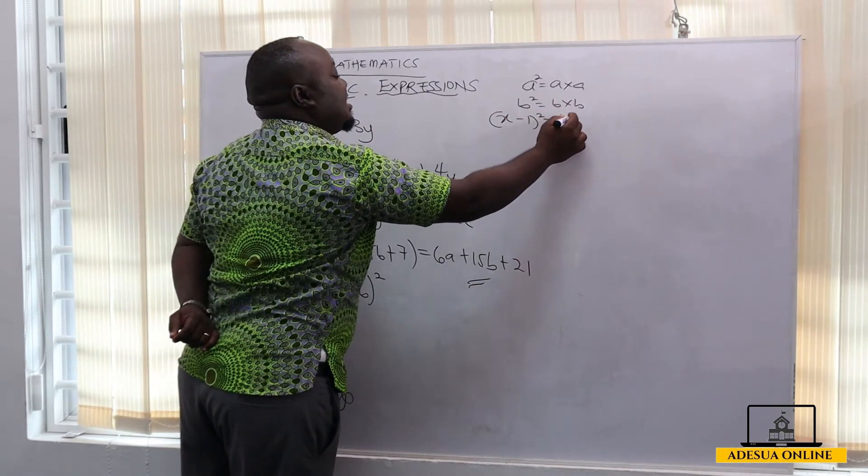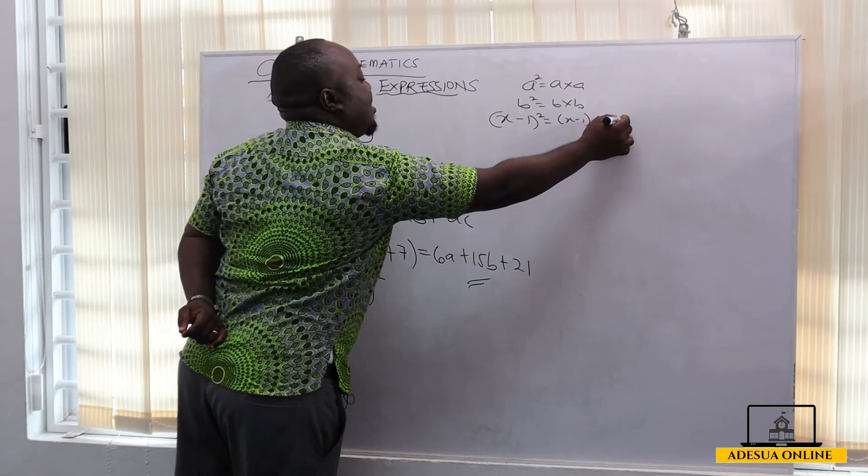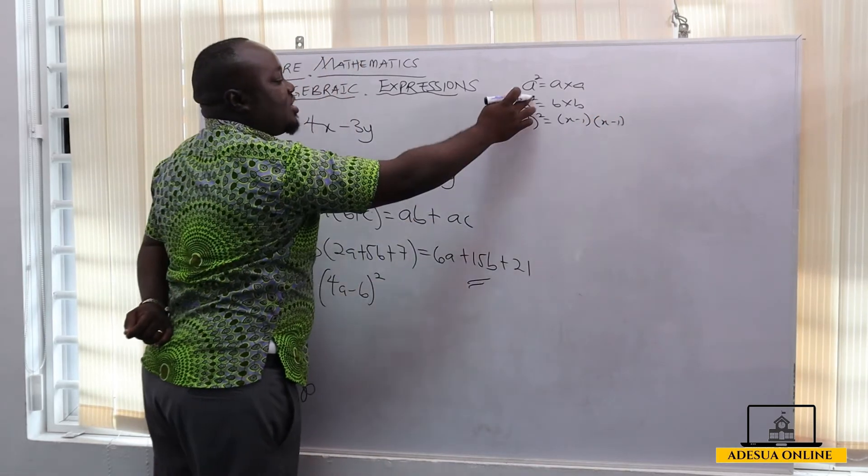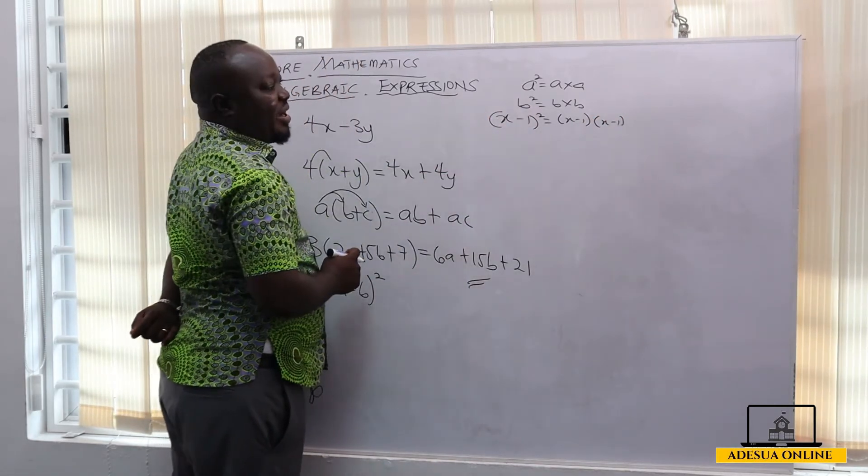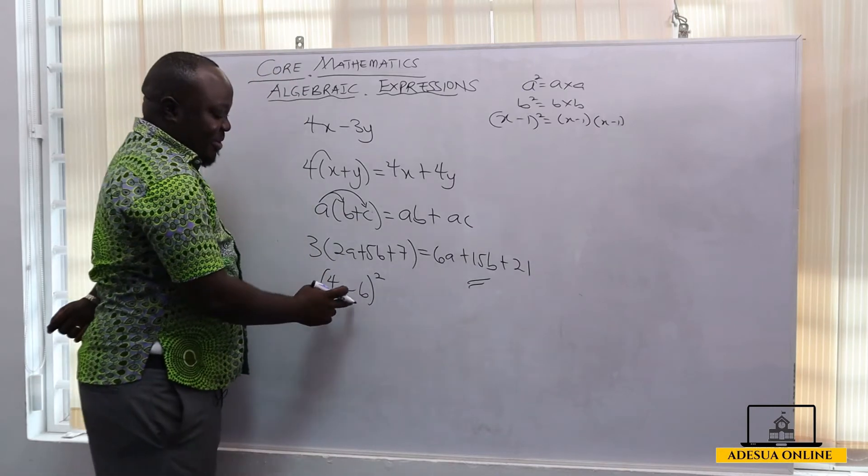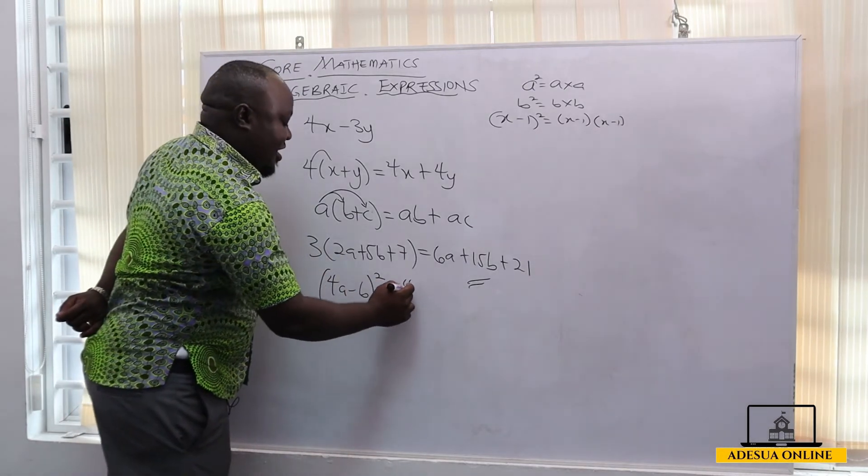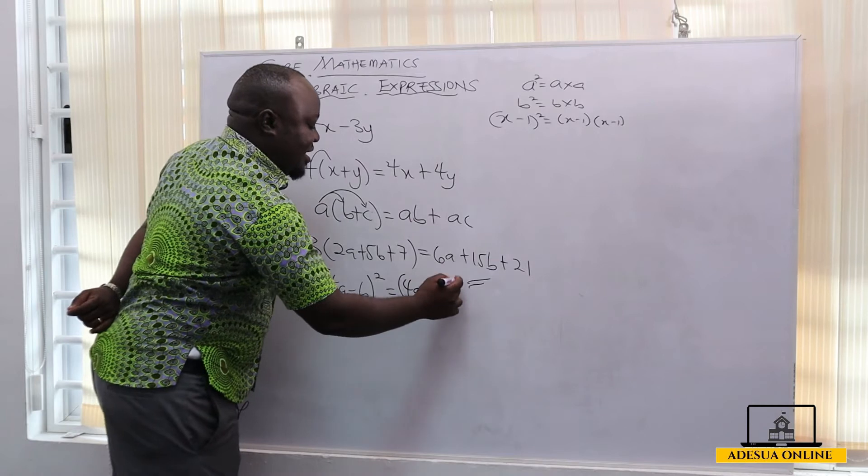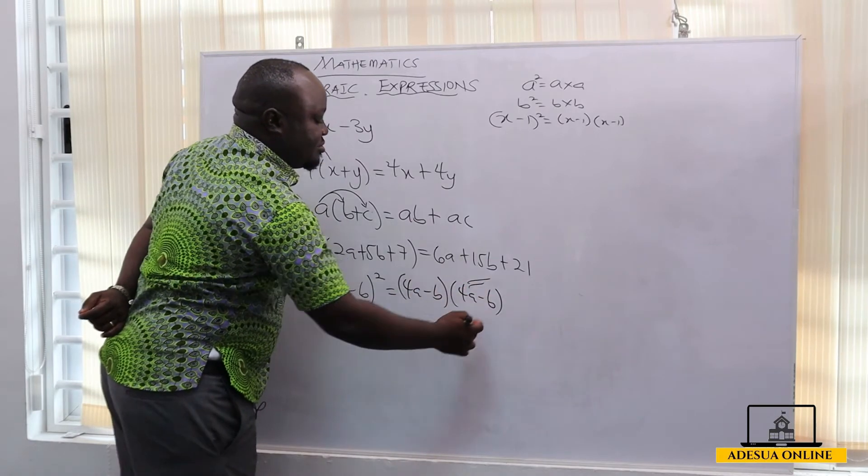If I have x minus 1 all squared, this is x minus 1 times x minus 1. The square is affecting everything in the brackets. So if I have 4a minus b, this is 4a minus b and then 4a minus b.